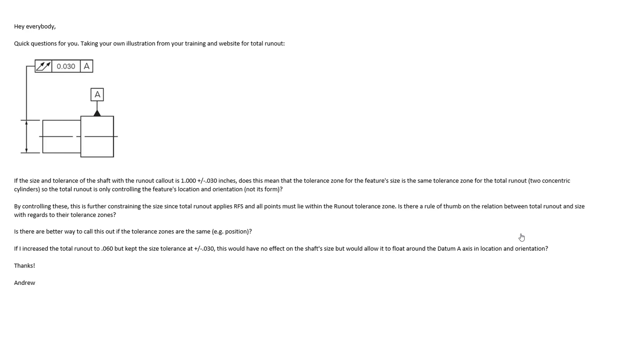Andrew is asking, based on our illustration on our GD&T wall chart, if the size and tolerance of the shaft with runout is one inch plus or minus 0.03 inches, does that mean the tolerance zone for the feature size is the same tolerance zone for the total runout, two concentric cylinders? Really what this is asking is, does rule number one take over here if we had a size tolerance tighter than the total runout? Continues to ask by controlling these as further constraining the size since the total runout applies RFS and all points must lie within the runout tolerance zone.